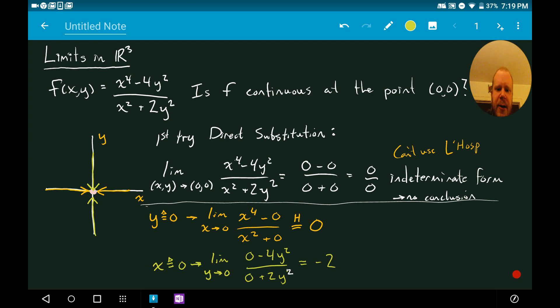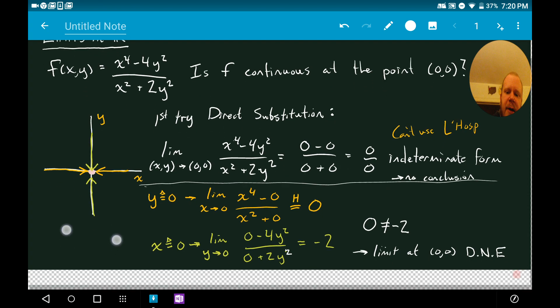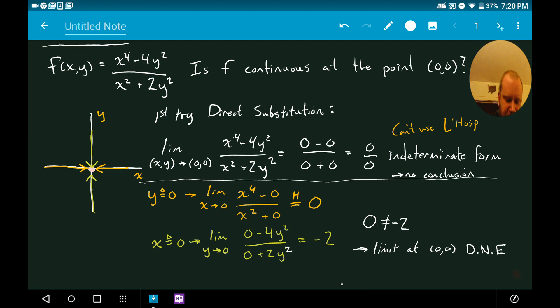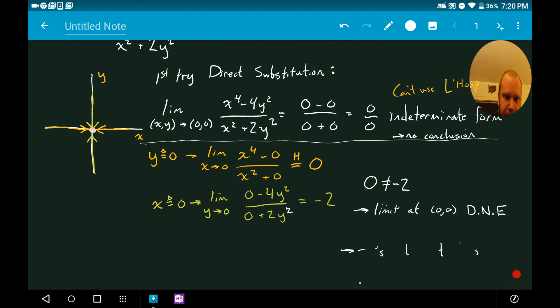We've already shown that the limit doesn't exist here, right? Because what we've said is that the limit along this path is equal to zero. The limit along this path is equal to negative 2. So if we want to be really pedantic about it, we can say zero is not equal to negative 2. Therefore, limit at (0,0) does not exist. And we can even take this conclusion even further and say that this means that f is not continuous at (0,0).